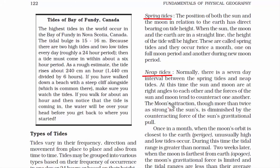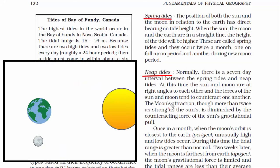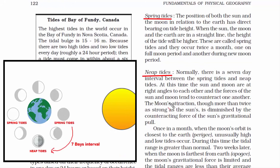Neap tides occur when the sun and moon are at right angles to each other. In this position the sun diminishes the moon's gravitational pull, and the combined forces counteract one another, creating low tides. There is a 7-day interval between spring tides and neap tides. Spring tides occur when the moon is at the new and full moon positions; neap tides occur when the moon is at the quarter positions.